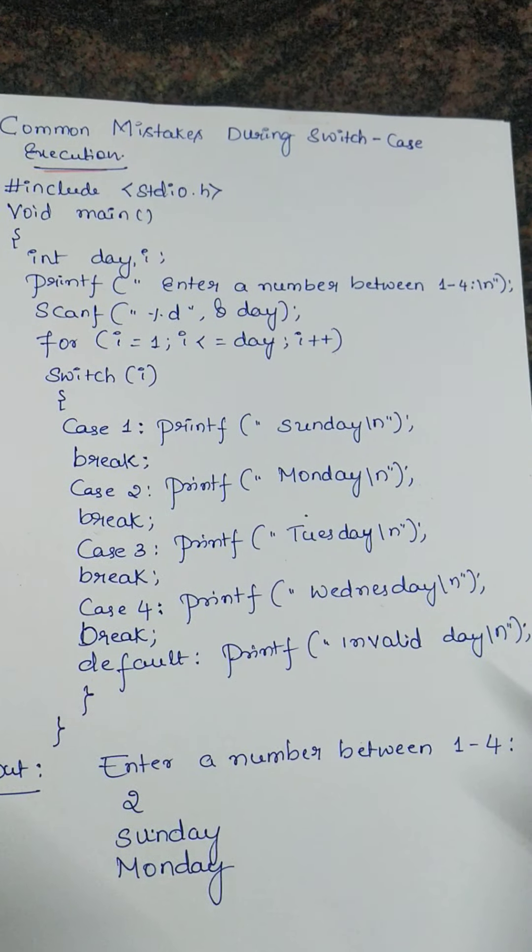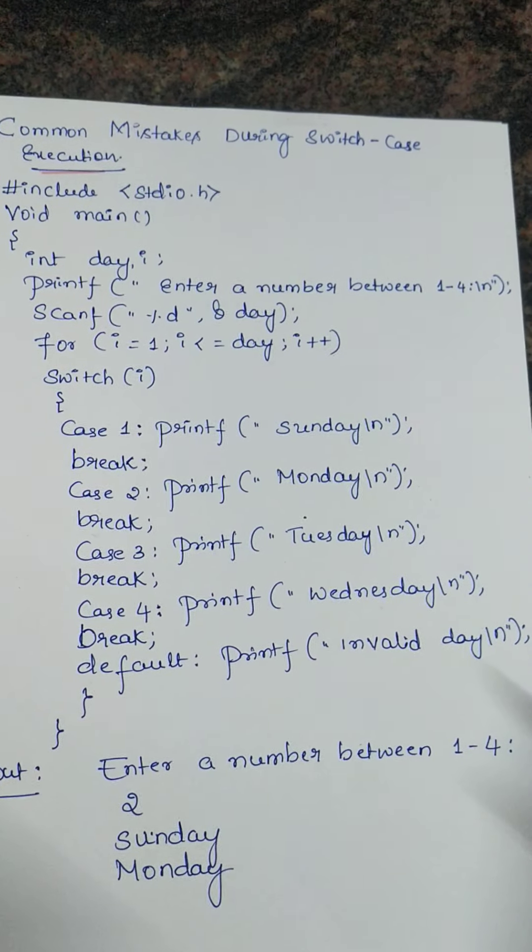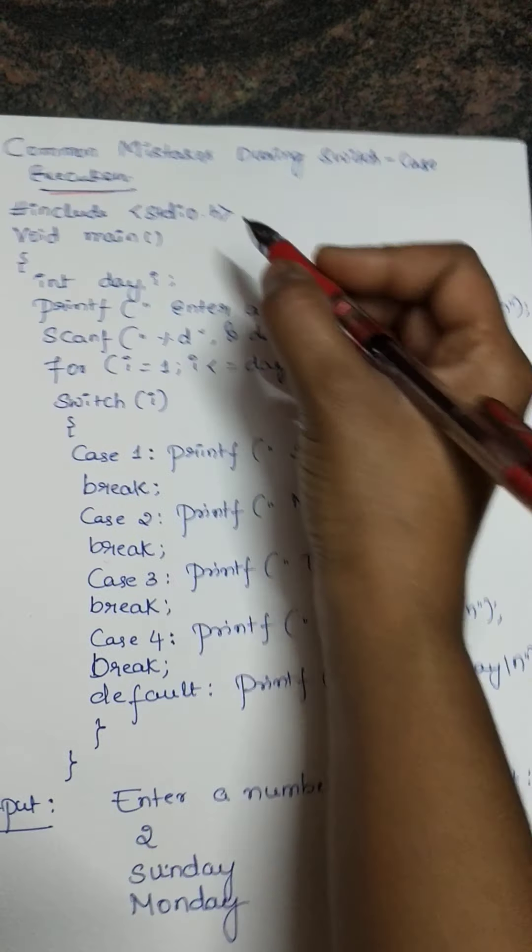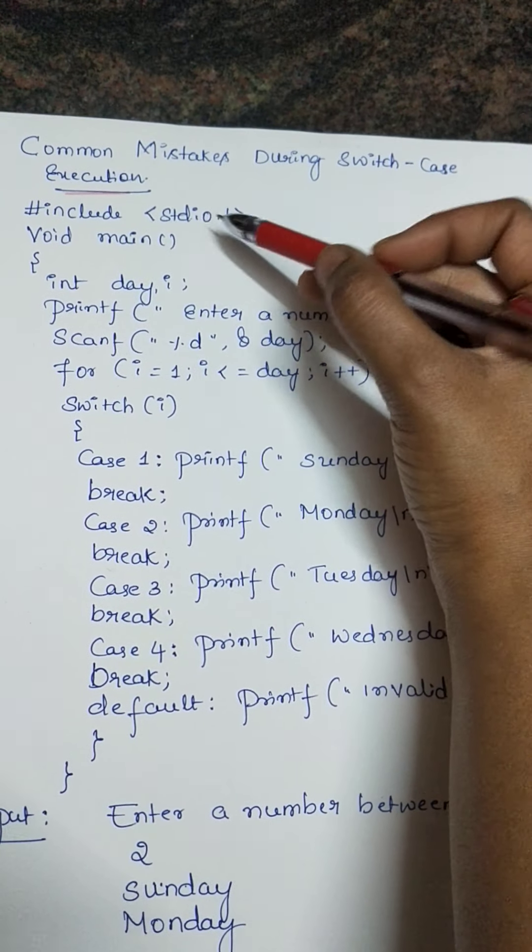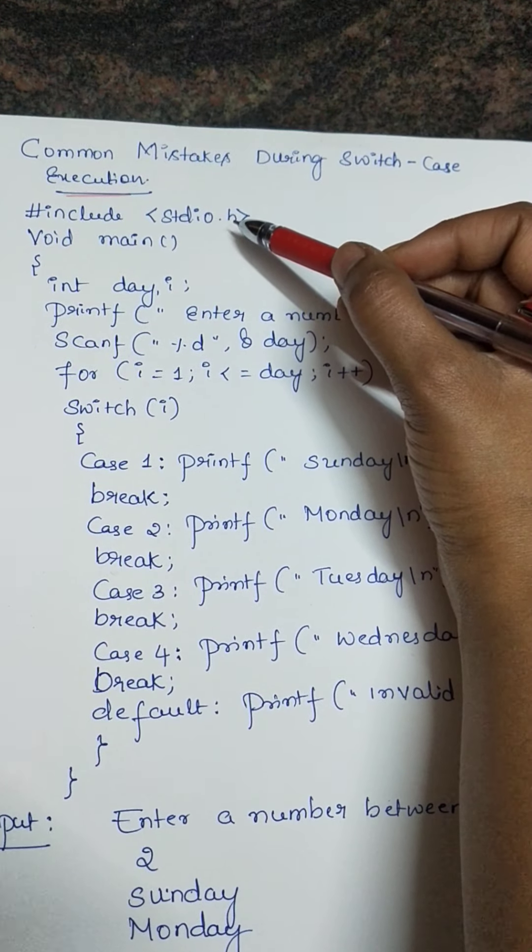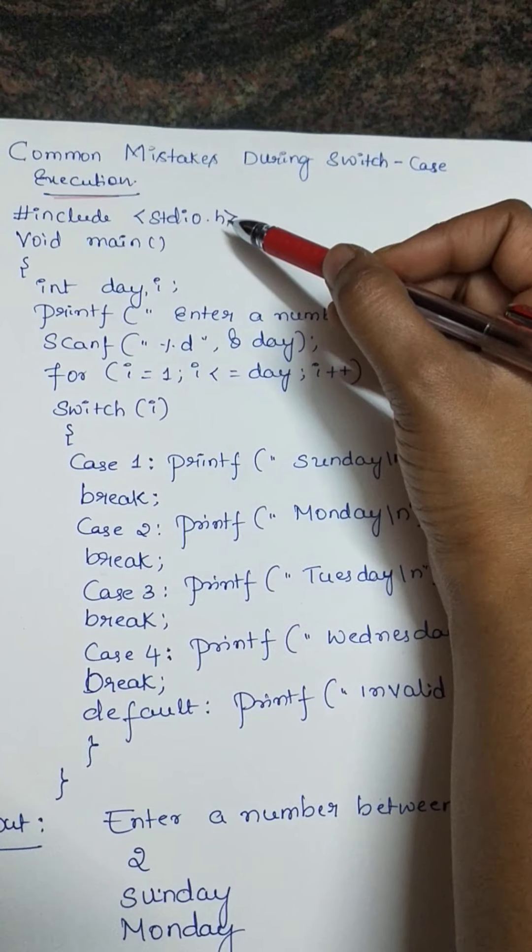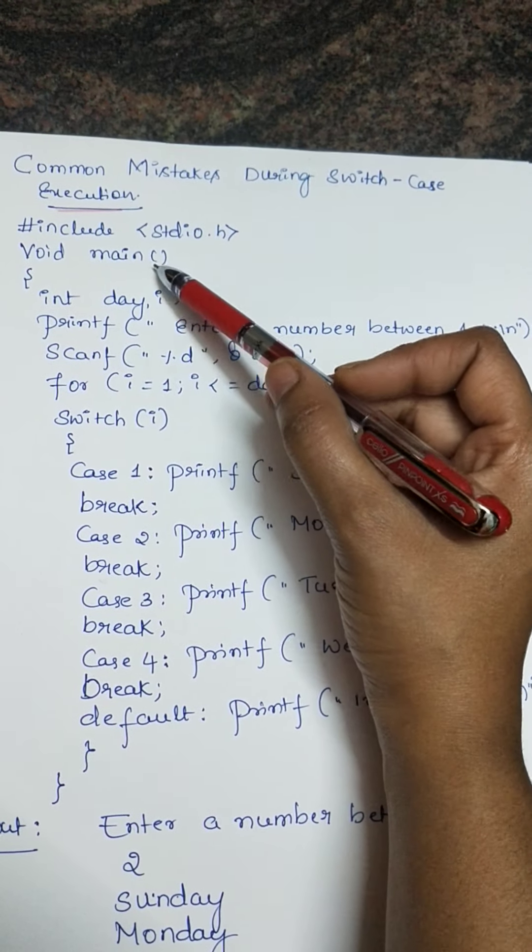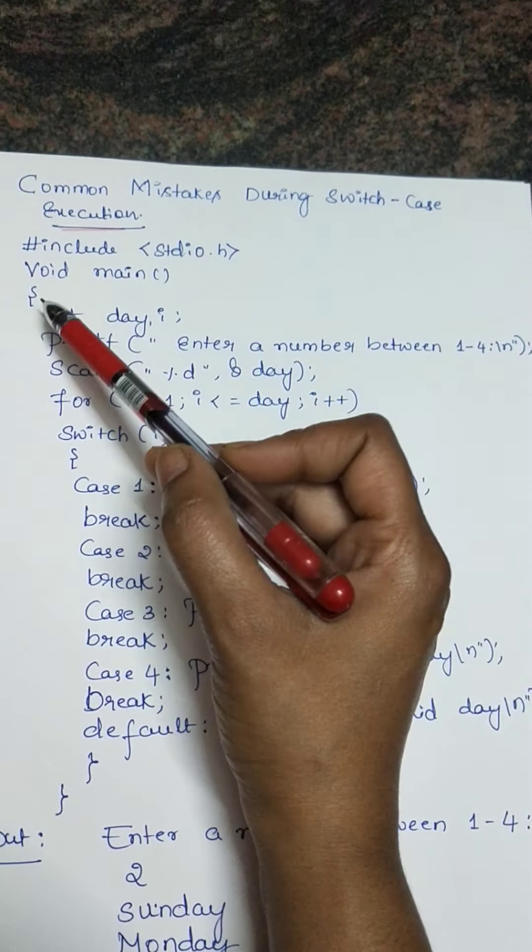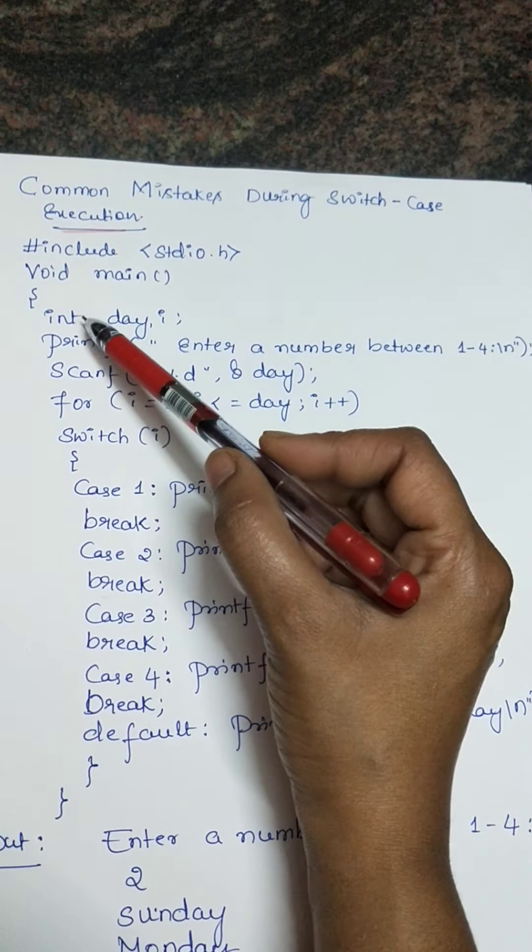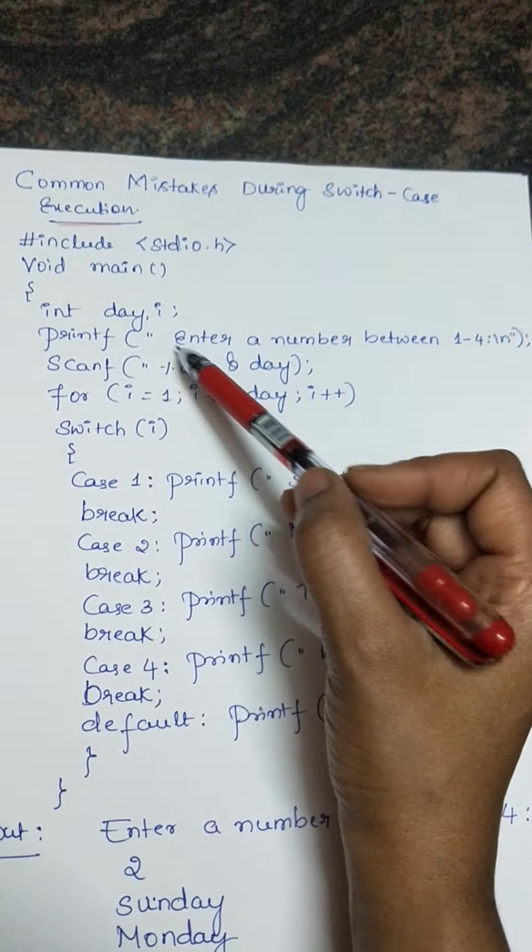Here I have taken an example of finding the day of a week. The first line is hash include stdio.h, which is meant for the standard input output header file. It includes input output functions like printf and scanf in our program. That's why we are going to include this preprocessor directive void main. So here main is the function where the program execution begins. After that we are going to open an opening flower bracket.